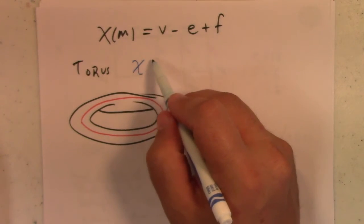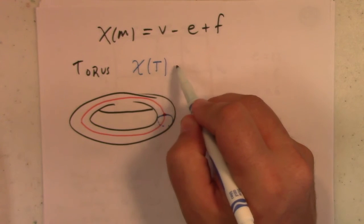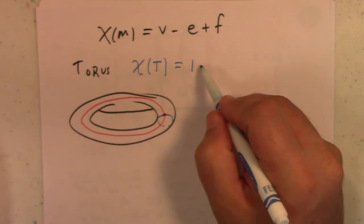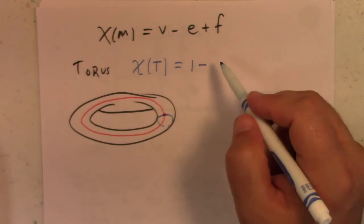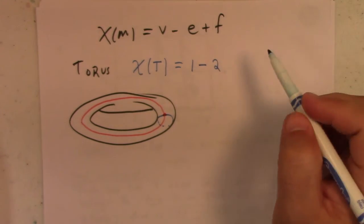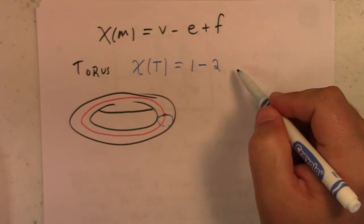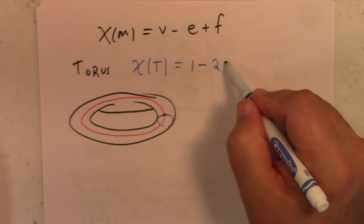So the Euler characteristic for the torus, plus one vertex minus how many edges? Two edges, right? The red edge and the blue edge. And then plus how many faces? One face.